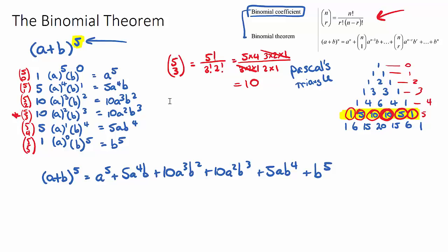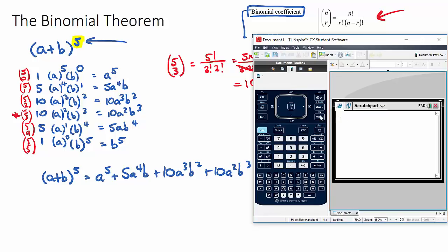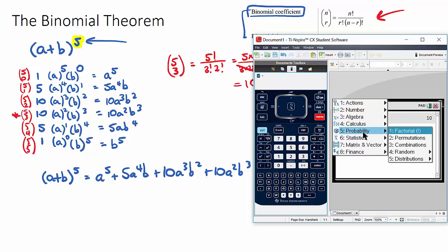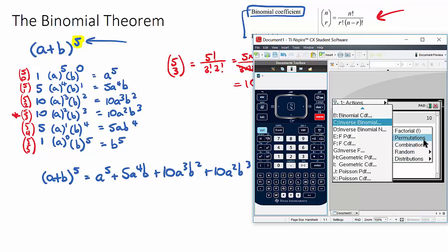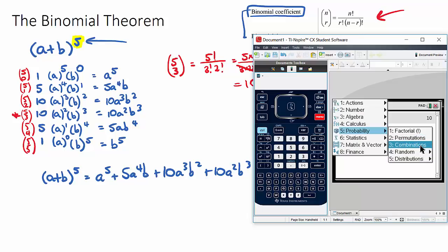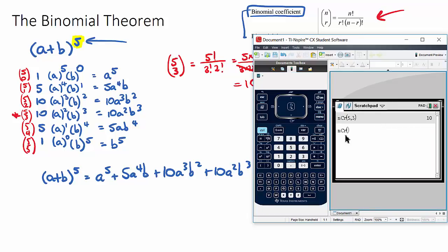If you have a calculator, you can type in nCr with five and three and it gives you 10. On a different calculator it's usually found in the probability or combination section.